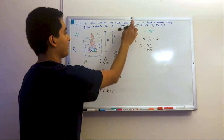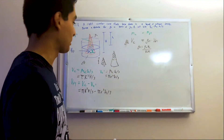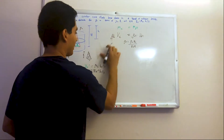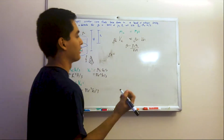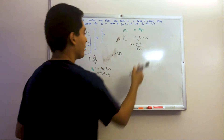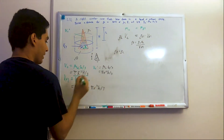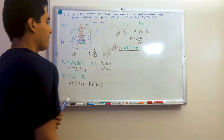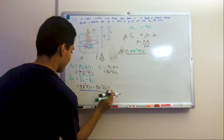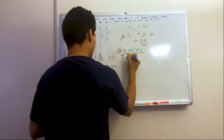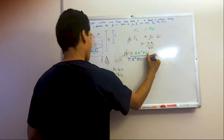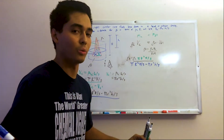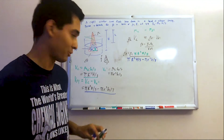So rho of the fluid is going to be rho_c times the volume of the cone, which is pi*R²*H/3, divided by the volume of the fluid, which is pi*R²*H/3 minus pi*r²*h/3. I'm going to do several math tricks — I'll try to explain them as I go, regardless of your math level.